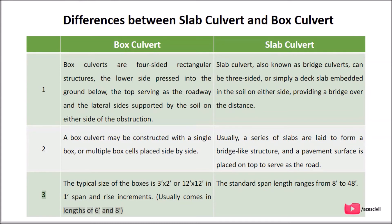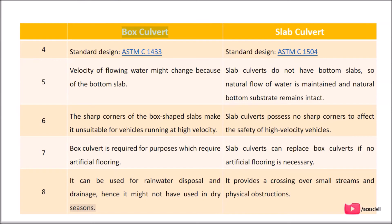Difference 3 & 4 — Size and Standards: The typical box culvert sizes are 3x2 or 12x12, with standard span lengths ranging from 8 to 48 increments. Box culverts follow standard design ASTM C1433, while slab culverts follow standard design ASTM C1504.